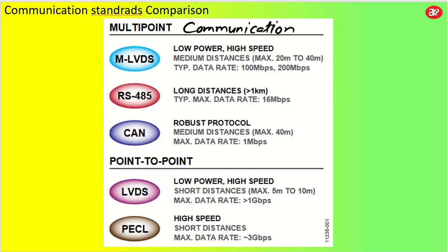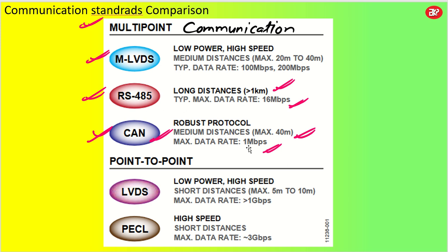Let us briefly talk about the communication categories available. We have a lot of communication standards. We have MLVDS, RS-485, and CAN. MLVDS is low power, high speed — up to 100 Mbps or something like that, it can go very easily. RS-485 is for very long distance but has a very low data rate of up to around 16 Mbps. CAN protocol is basically utilized in automotive applications — it has a very short distance of around 40 meters, and the data rate is even less than RS-485 at just 1 Mbps.